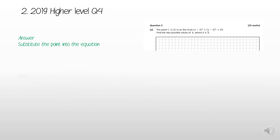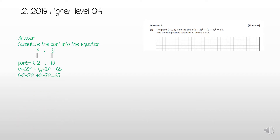We substitute the point (−2, k) into the equation of the circle. The x-coordinate is −2 and the y-coordinate is k. So for x we substitute in −2, and for y we substitute in k. You'll end up with (−2 − 2)² + (k − 3)² = 65.